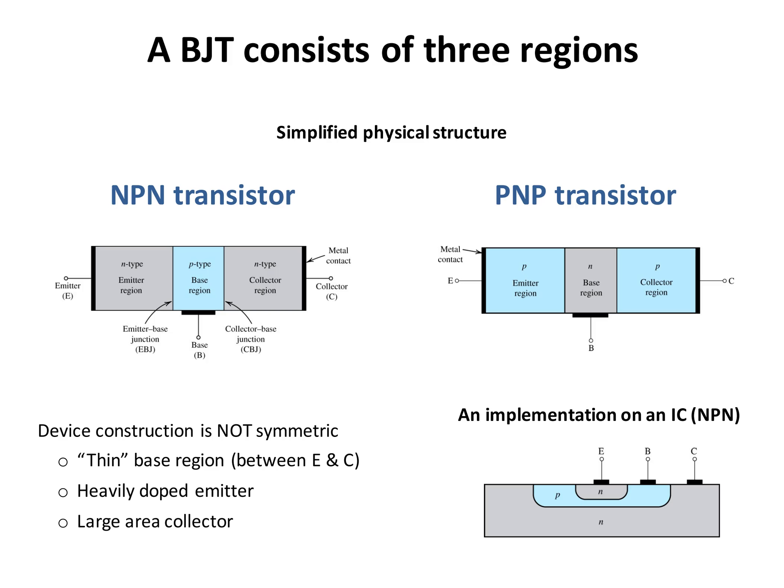You can use this principle to generate a voltage-controlled current source for the purpose of using it in amplifiers, or to change the current from a large value to current equal to zero, which can be used for building switches and for use in digital logic circuits.